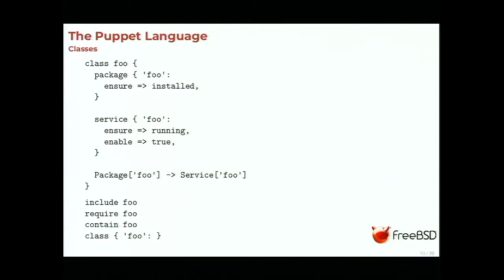Here is a simpler example with just a service and a package to manage. The last line indicates that I want the package foo to be managed before managing the service foo, because the service is installed by the package. When I declare a class, it's not added to the catalog. I have to either use include, require, or contain — which basically add relationships — or use a resource-style declaration, which we'll speak about later.